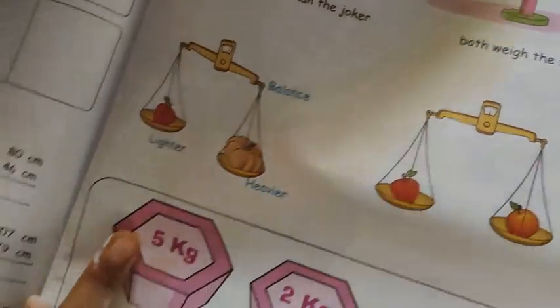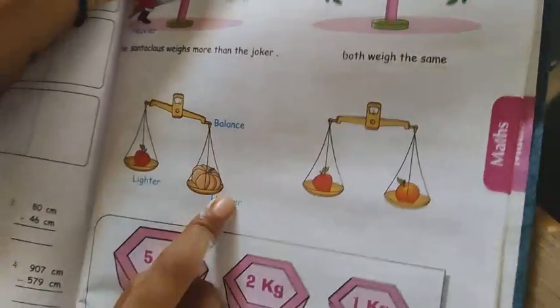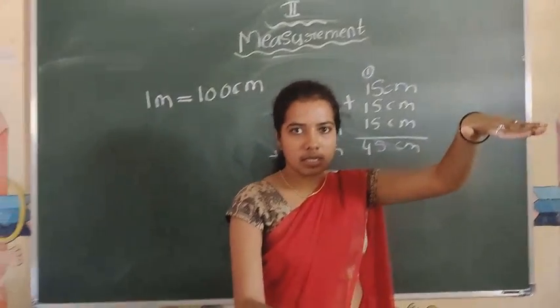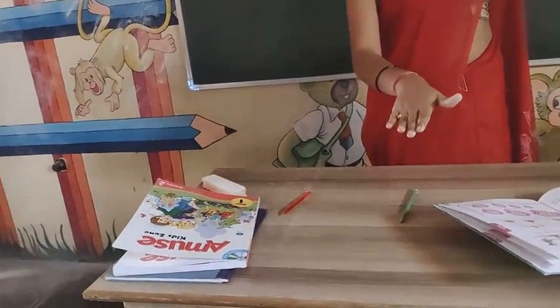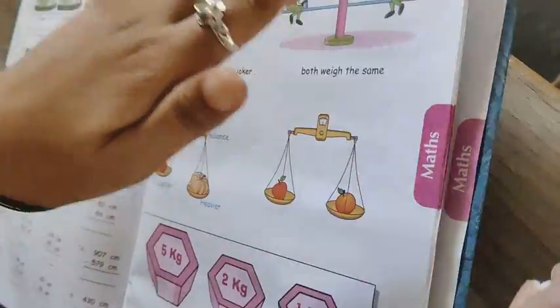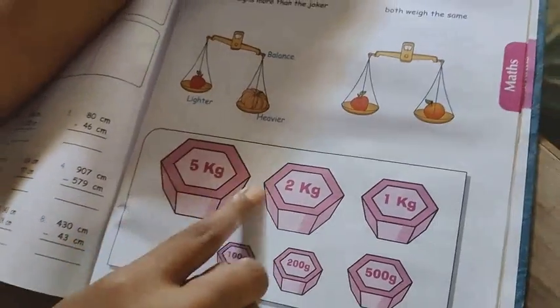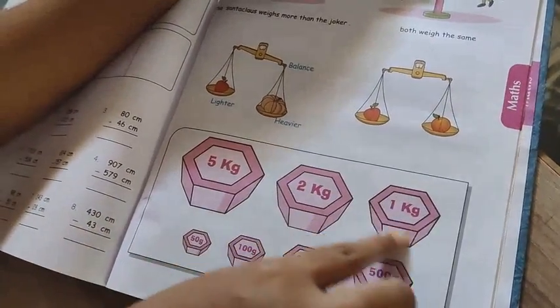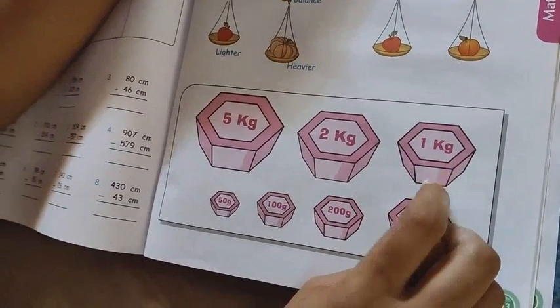Here also — see — this is the lighter one, this is the heavier one. So this measuring balance works like this: the heavier will go down, the lighter will come up. Like that only. Here, both fruits are in the same weight, so they are balancing. You see — these are the measuring stones.